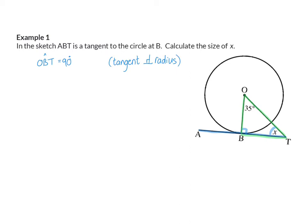Now I can calculate X by saying angle X is 180 degrees minus the other two angles in that triangle, which are 35 degrees and the 90 degrees we've just proven. My reason: interior angles of a triangle. And that means that X is 55 degrees.